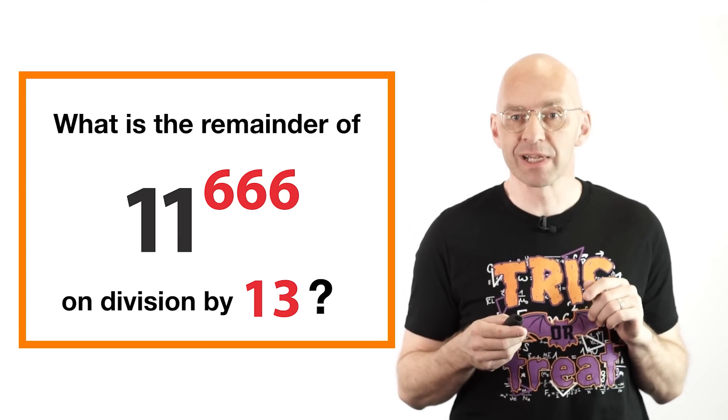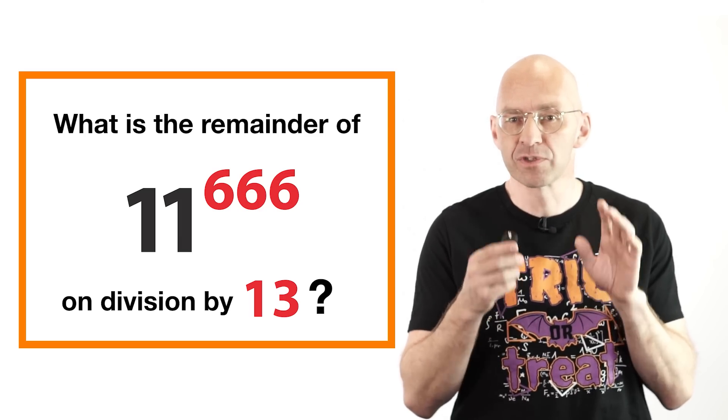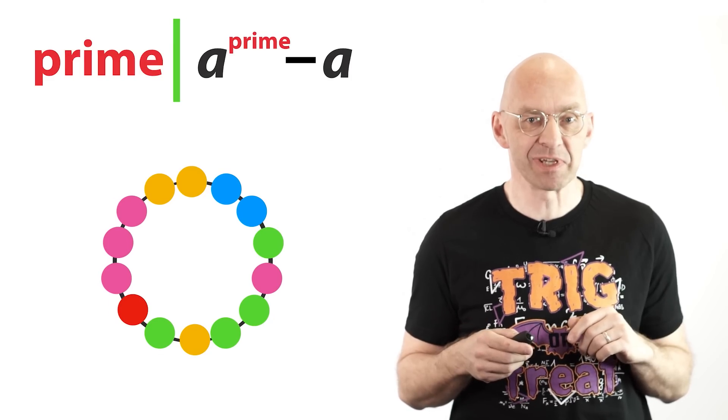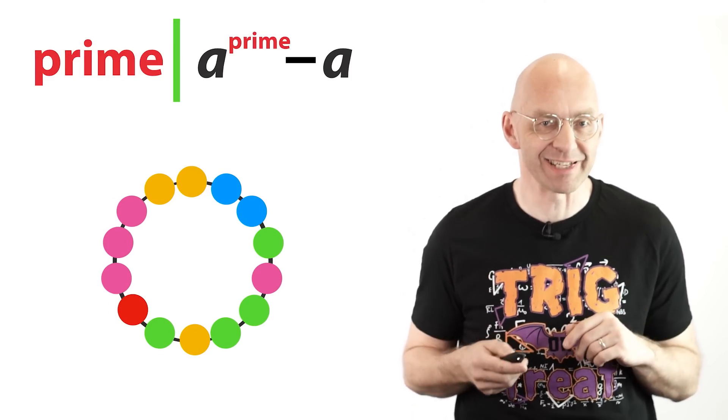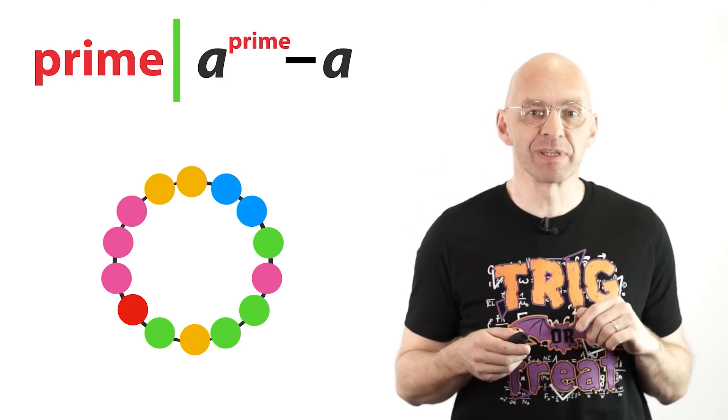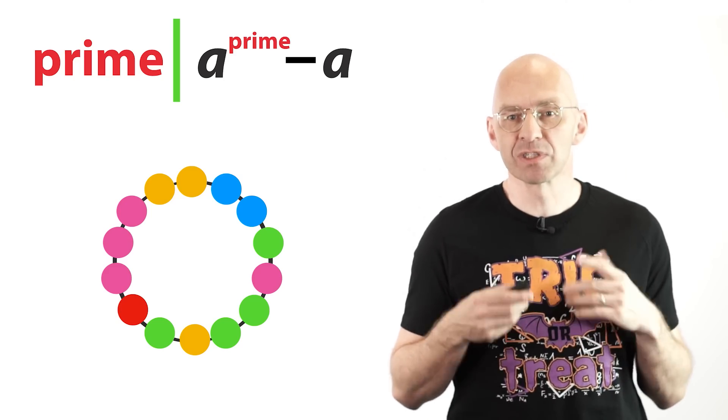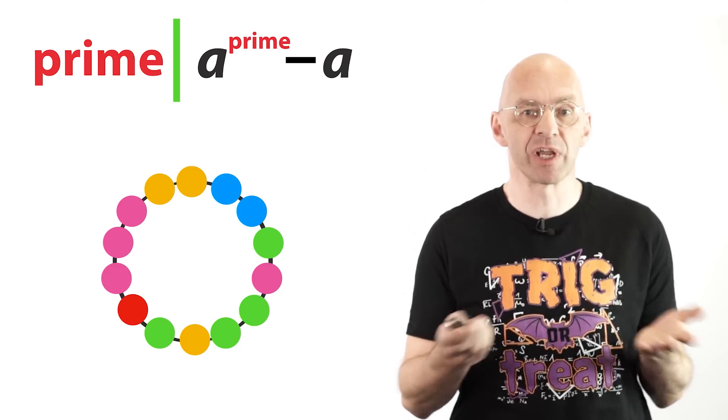But first the proof. It turns out that to prove Fermat's little theorem all we have to do is to count some pretty necklaces. What do necklaces have to do with any of this? Don't worry, of course I'll explain. As regular viewers are probably now very used to, I'll focus on one example which is sufficiently generic to illustrate the general proof.